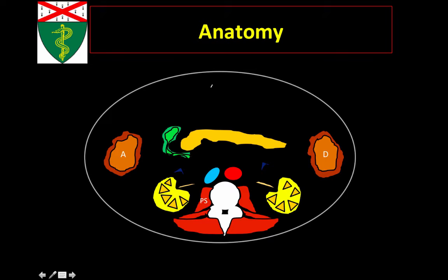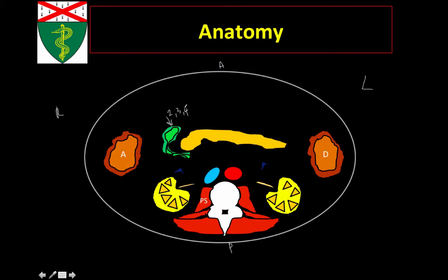Before we get started on the different retroperitoneal spaces, let's go over some of the anatomy in the axial plane. To orient everybody: anterior is over here, posterior here, this is the right of the patient, and this is the left. Here we have the ascending colon, and to the left is the descending colon. This is the duodenum, and it turns out that most of the duodenum is retroperitoneal — the second, third, and fourth portions are retroperitoneal, while the first portion is actually intraperitoneal.